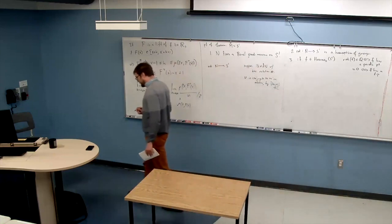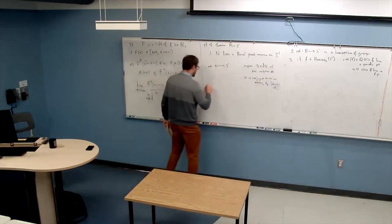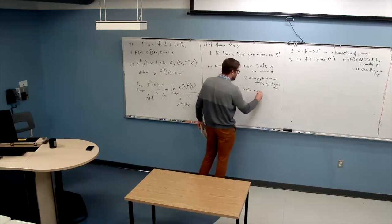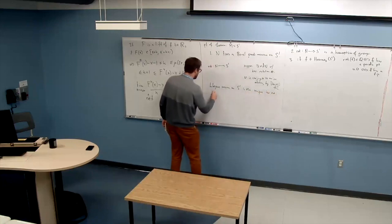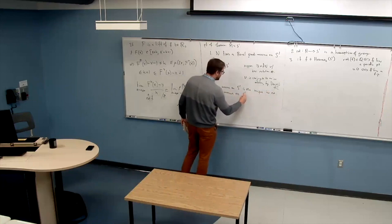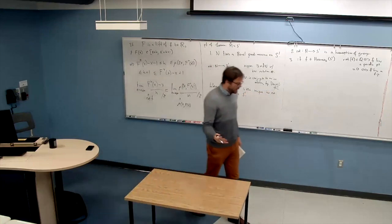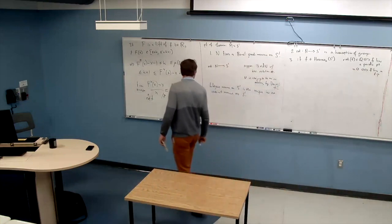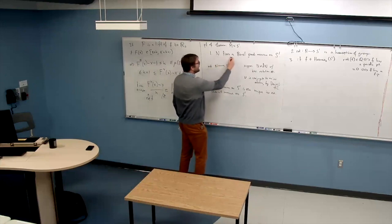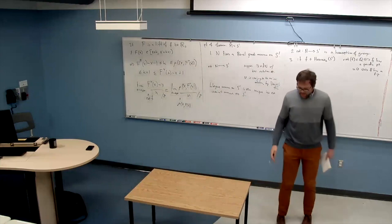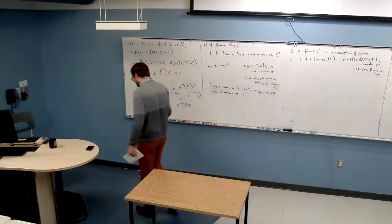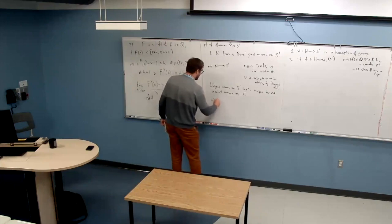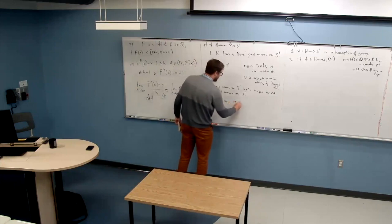One further fact I'll gloss over: the Lebesgue measure on S¹ is the unique irrational-rotation-invariant measure on S¹. This can be proved from Fourier theory. By part one — fixing a Borel probability measure on S¹ — the entire group N acts by Lebesgue-measure-preserving homeomorphisms of the circle, which implies N is conjugate to a group of rotations and must therefore be abelian.